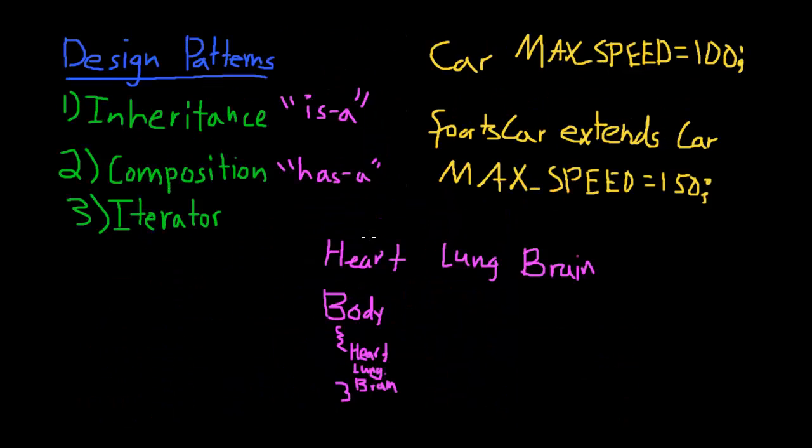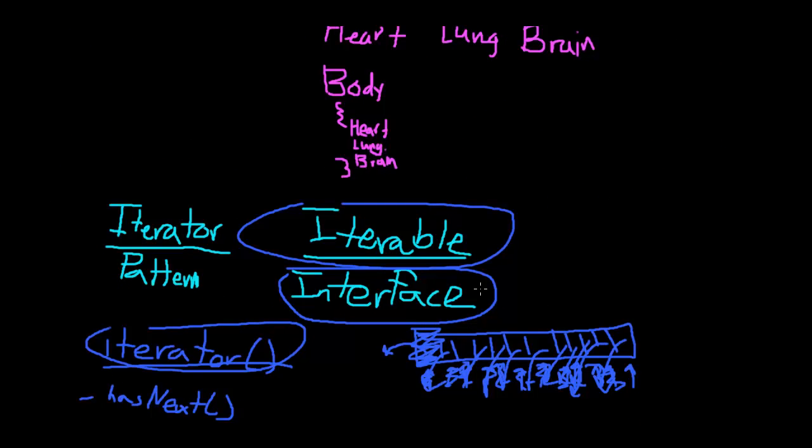So, yeah, just to go back up, those are our three design patterns. Remember, inheritance creates an is-a, so, a sports car is a car. Composition creates a has-a relationship. So, my body has a heart, has a lung, has a brain. And, the iterator pattern, it's this. So, I hope that helps. I noticed a lot of people tend to have trouble, kind of, wrapping their heads around it, and noticing the differences. So, I hope this highlights the differences, at least.